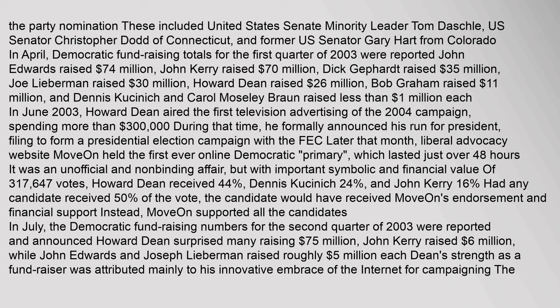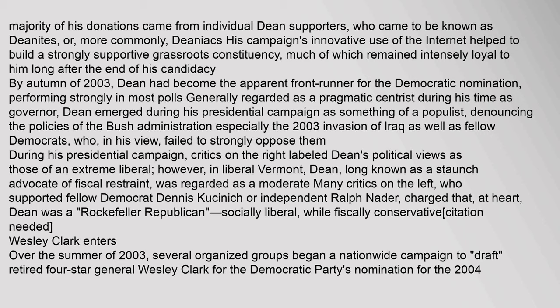In July, Democratic fundraising numbers for the second quarter of 2003 were announced. Howard Dean surprised many, raising $7.5 million; John Kerry raised $6 million, while John Edwards and Joseph Lieberman raised roughly $5 million each. Dean's strength as a fundraiser was attributed mainly to his innovative embrace of the Internet for campaigning. The majority of his donations came from individual Dean supporters, known as 'Deanites' or, more commonly, 'Deaniacs.'